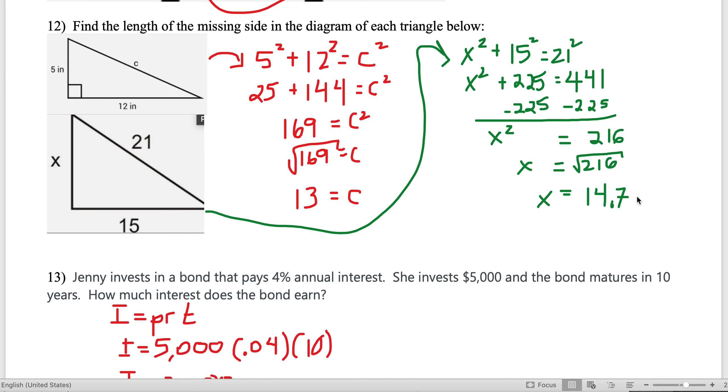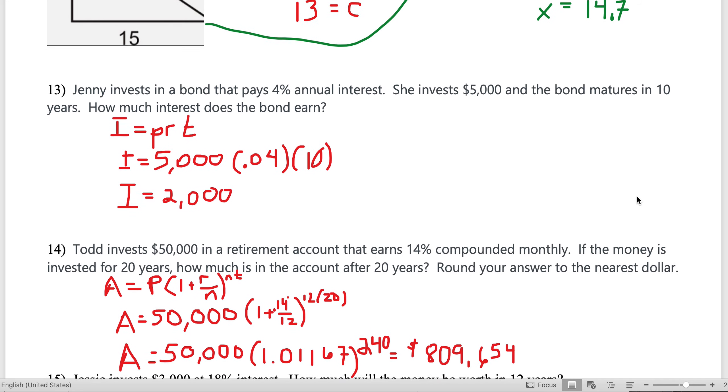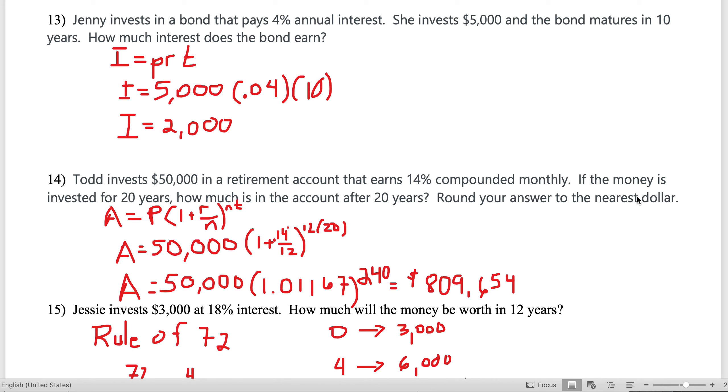x is 14.7, rounded to the nearest tenth. Sometimes they'll ask you to leave the answer as a radical—if that's the case, you leave it radical 216. Sometimes they'll say express it as a decimal rounded to a particular place.